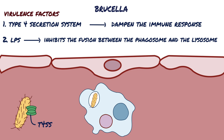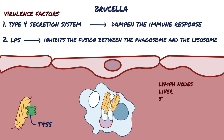Once Brucella is safe from intracellular destruction, T4SS starts secreting effector molecules. There are a whole bunch of these molecules, and their exact role is not yet well understood. But what we do know is that they help the bacteria travel to the endoplasmic reticulum, where it can replicate in large numbers. The ability to survive and replicate inside macrophages also makes it able to travel through the bloodstream to multiple organs, such as lymph nodes, liver, and spleen.